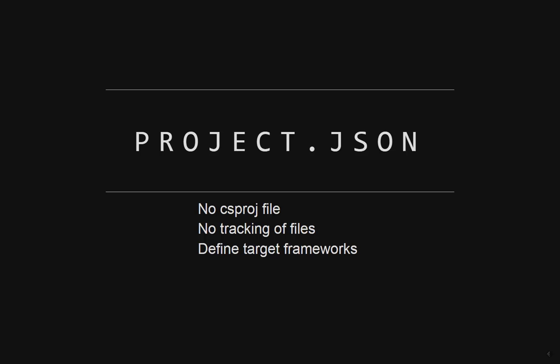The other interesting thing about project.json is we can define the different frameworks we want to target. At a high level, we can target multiple frameworks simultaneously from the one web project, which makes migration a lot easier - going from .NET 3.5 to 4 can cause a whole world of pain. Finally, you can also define the commands you want to be able to run in project.json - like tests or how you want to bootstrap your website on a particular port. We'll see some examples of that shortly.